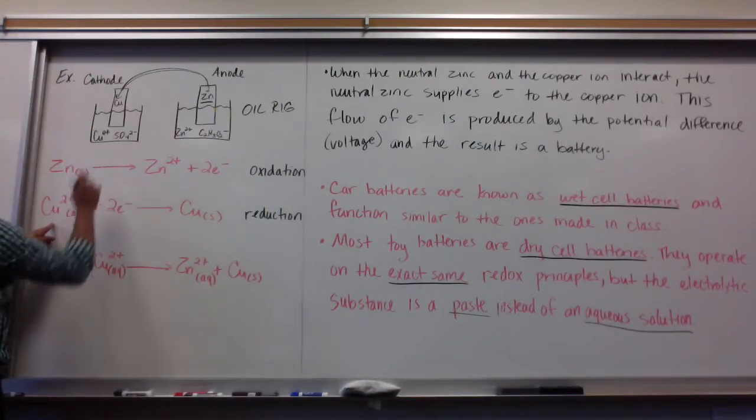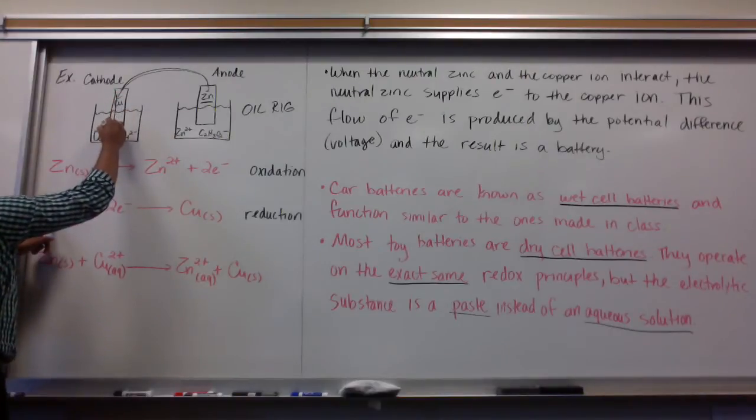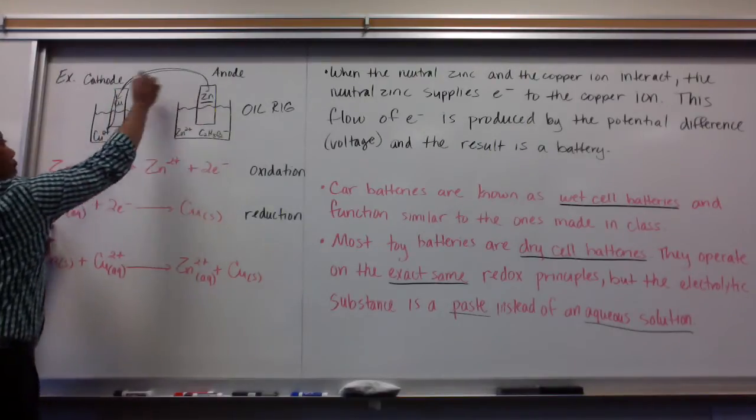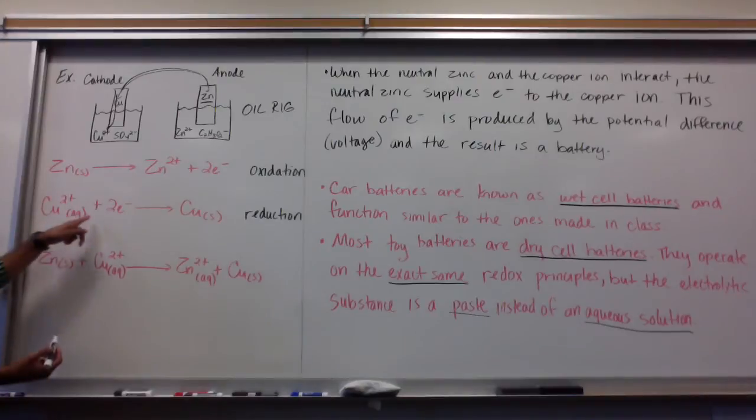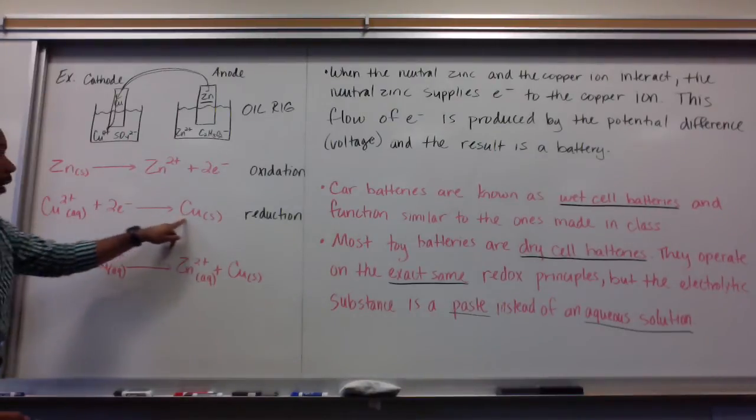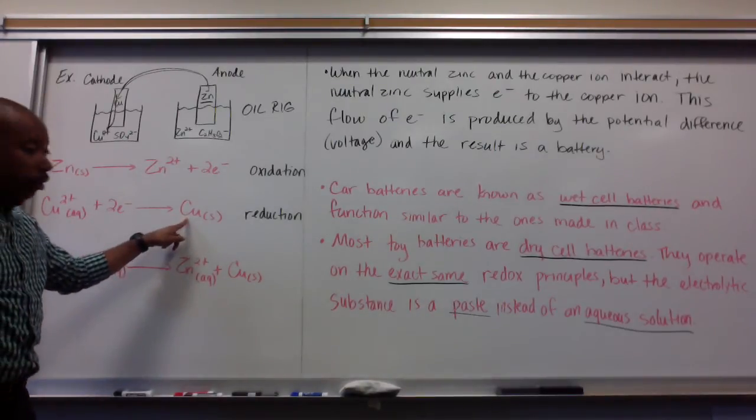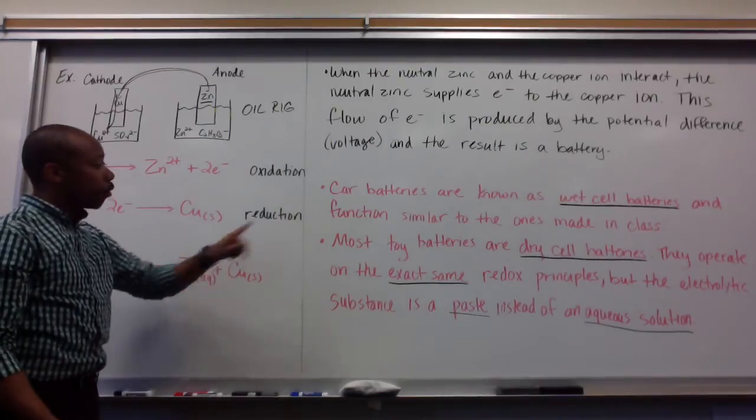Copper 2 plus, which is in solution down here, gains the two electrons given by the zinc. When copper 2 plus gains two electrons, it becomes electrically neutral and turns into solid copper. This is our reduction step.